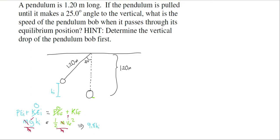So we have 9.8 times the initial height equals one half of the final velocity squared. Unfortunately, we still have two unknowns, and to find the final velocity, I need some way to find the initial height. There's no physics that will find this initial height, but there is math.